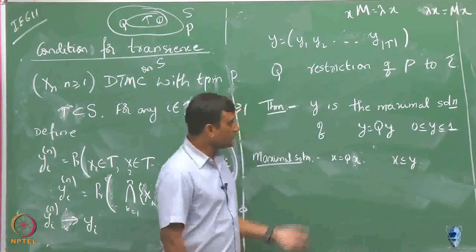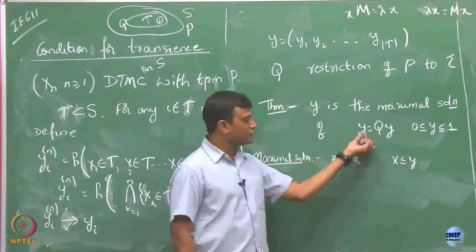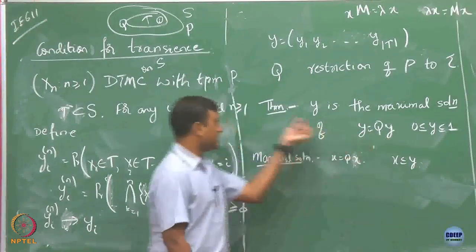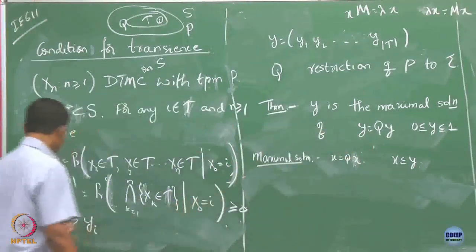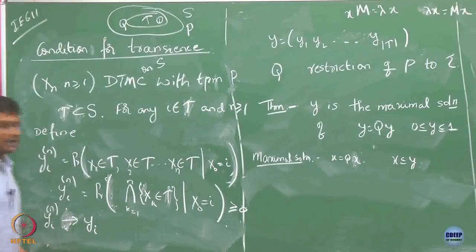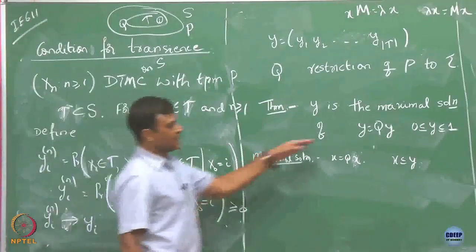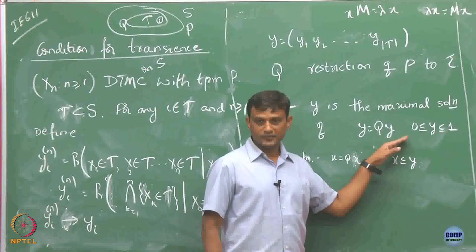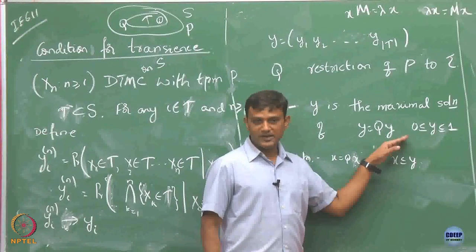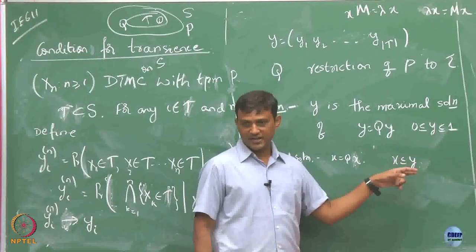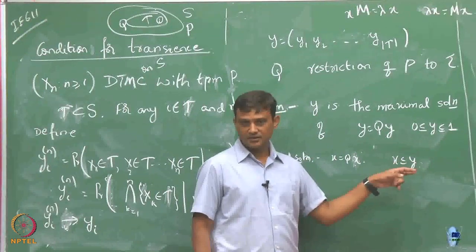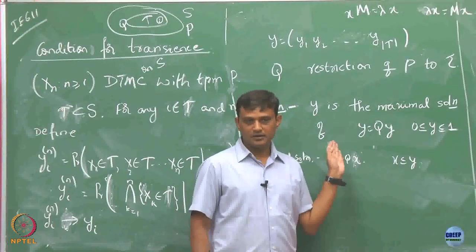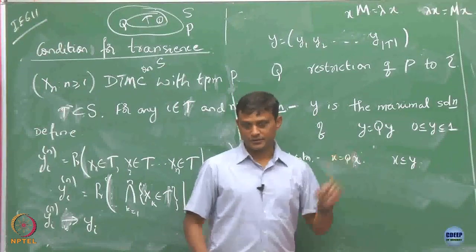There could be many solutions to Y equals QY, but this special Y is going to be the maximal solution — componentwise it will have the largest elements compared to any other possible solution.